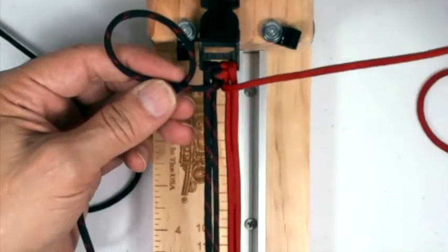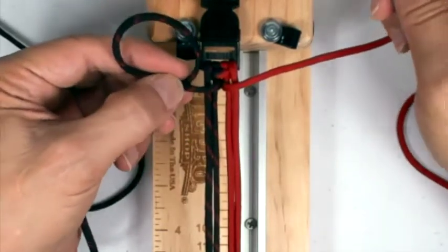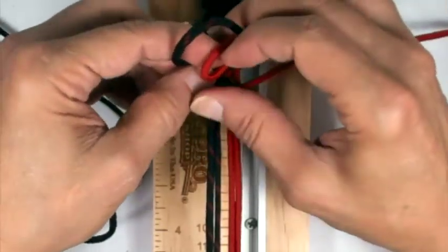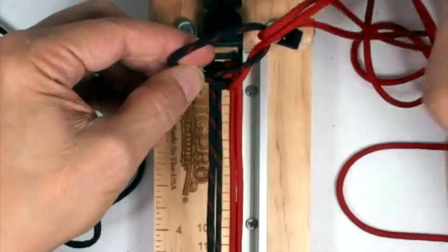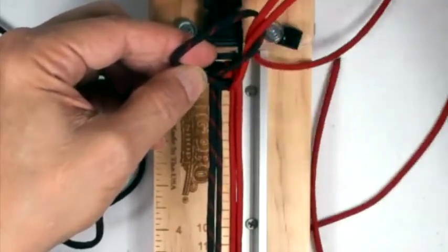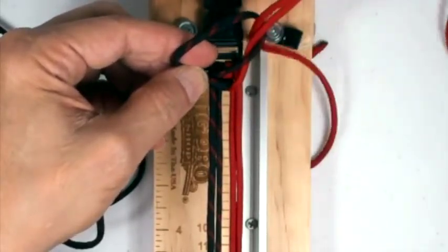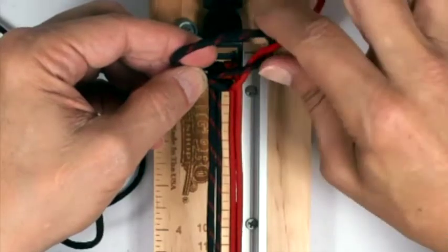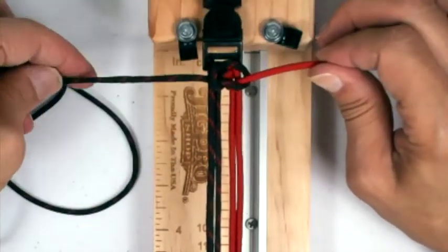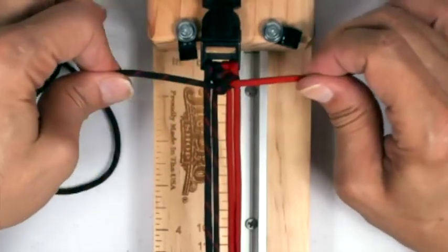You're going to grab your right cord. You're going to go in through that loop and pull the cord out. Okay, now you start tightening. The first one is going to look rather odd.